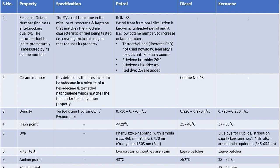The density of petroleum products is determined using a hydrometer or pycnometer. For petrol it is 0.710–0.770 g/cc, for diesel 0.820–0.870 g/cc, and for kerosene 0.780–0.820 g/cc. Flash point for petrol is less than 21°C, for diesel 35–40°C, and for kerosene 37–65°C.